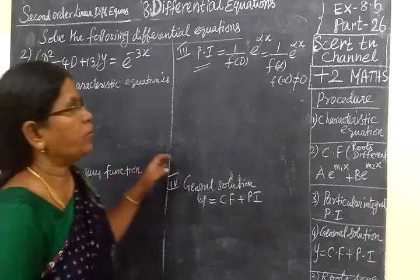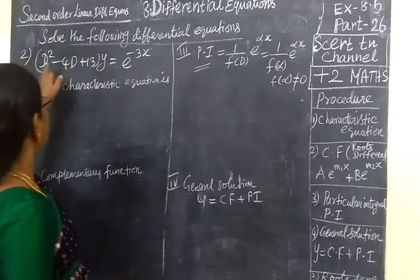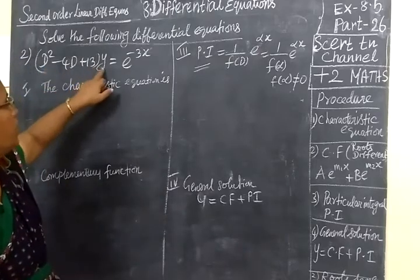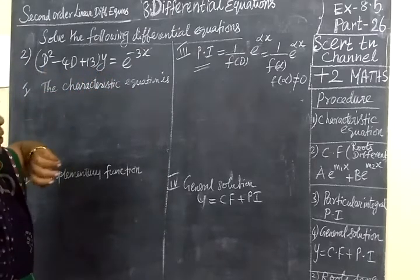So now we are seeing part 26. Second sum, d squared minus 4d plus 13 of y equal to e power minus 3x.